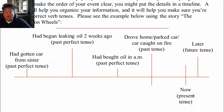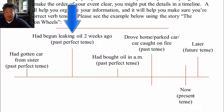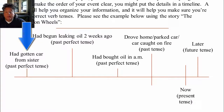If you look at the progression of the tenses, we start in the simple past tense because I'm remembering this event — I drove home, I parked the car, the car caught on fire. Before that, I had bought oil in the morning. Before that, it had begun leaking oil two weeks ago. And before that, I had gotten the car from my sister. Look at how the tenses are all laid out on the timeline.